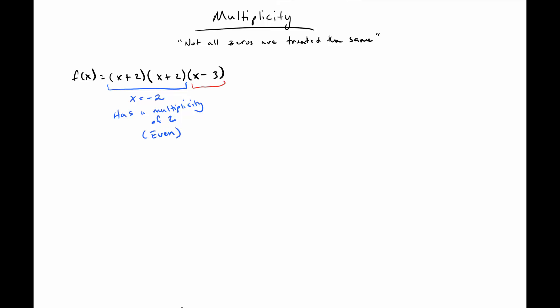Now x minus 3 here is all by its lonesome, but more importantly, the zero x equals 3 has a multiplicity of 1. And again, the more important part there is it's odd.